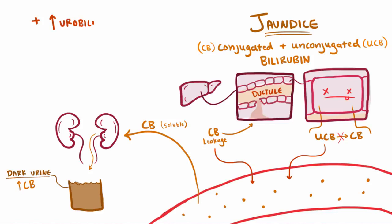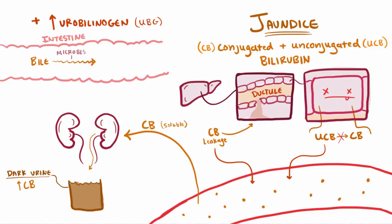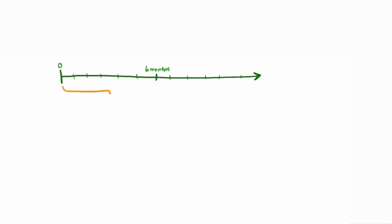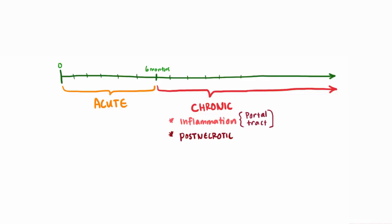Another common finding is increased urobilinogen in the urine. Urobilinogen is produced when bilirubin is reduced in the gut by intestinal microbes. Normally most of that is reabsorbed and transported back to the liver, but if these liver cells aren't working right, the urobilinogen is redirected to the kidneys and excreted. If symptoms continue or the virus sticks around for more than 6 months, viral hepatitis goes from acute to chronic. Inflammation mostly happens in the portal tract, and ongoing inflammation and fibrosis may progress to post-necrotic cirrhosis.